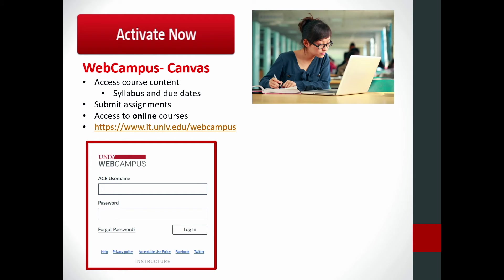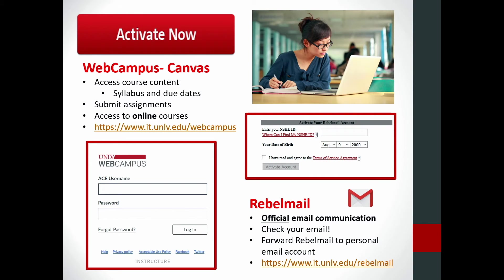In order to access online courses, you will need to activate your Web Campus account. Most professors will post copies of the syllabus there, and you will submit assignments through it. Most important information regarding online or in-person courses will be found through the Web Campus portal. Your most important email address during your time at UNLV will be your Rebel Mail — all official correspondence will be relayed through your Rebel Mail.